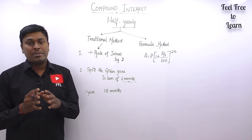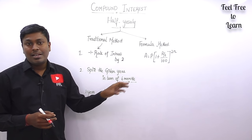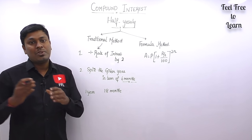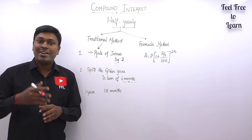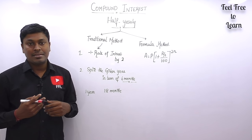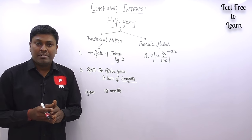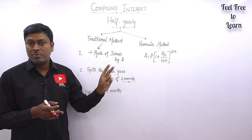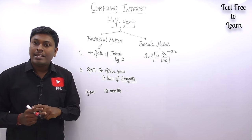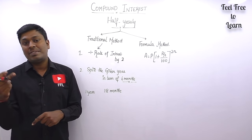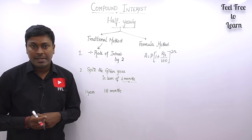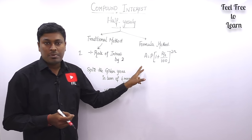The formula method is most helpful for solving compound interest compounded half-yearly. About 80% of questions are easily solved by the formula method. For some questions you may find the formula method somewhat difficult due to lots of multiplication. In that case, the traditional method will help you solve faster. My advice is to practice each question by both methods.